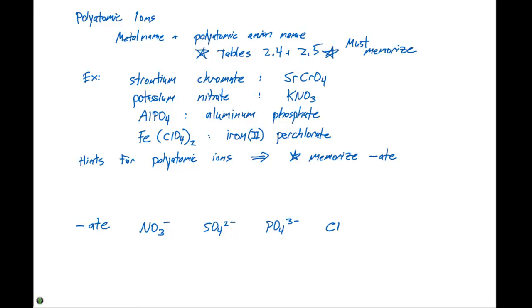And then chlorate, which is ClO3, with a minus 1 charge. I'm gonna put a box around here and tell you that you need to memorize all of these particular anions and their charges. Nitrate minus 1, sulfate minus 2, phosphate minus 3, chlorate minus 1.